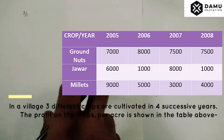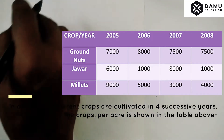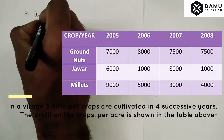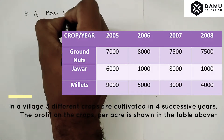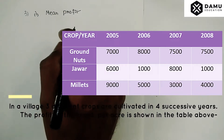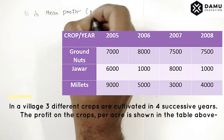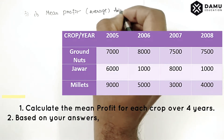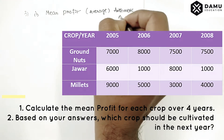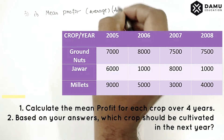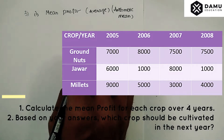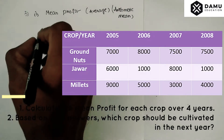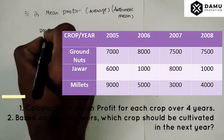The first question asks for mean profit for all four years. Mean profit is nothing but average — you can call it arithmetic mean. So we will calculate the arithmetic mean for each crop.